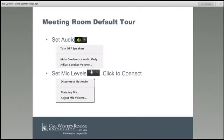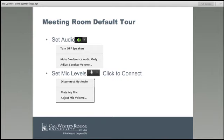Across the top you saw several icons — this is all what you see as a host or administrator. The first icon is for setting your audio: you can turn off your speakers, mute the conference audio, adjust speaker volume, or turn off audio if you're meeting by phone and just using Connect to collaborate. The microphone icon is for setting your mic levels — white means it's off, green means it's on. When you click it, options include disconnect, mute yourself, or adjust your volume.